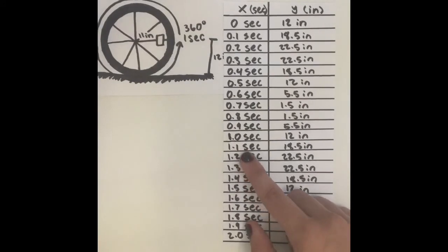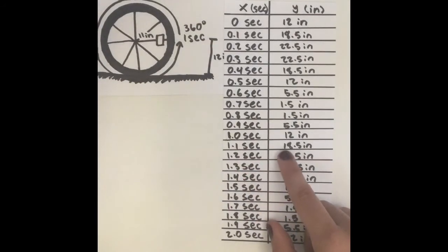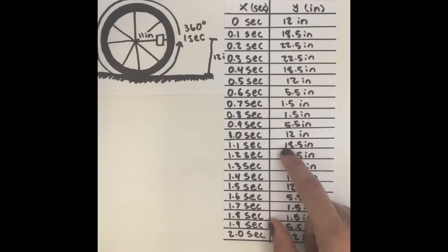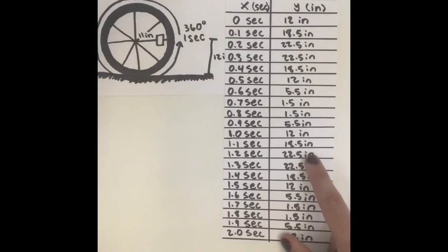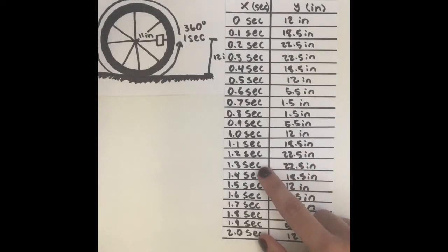At 1.1 seconds, the reflector goes back to 18.5 inches and is starting its second circle. At 1.2 seconds, the reflector is at 22.5 inches. At 1.3 seconds, the reflector is at 22.5 inches again.